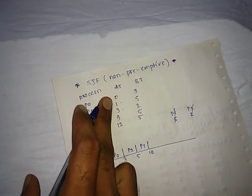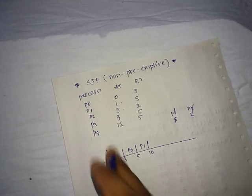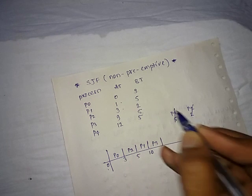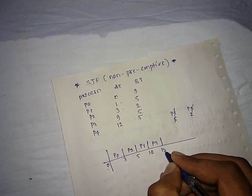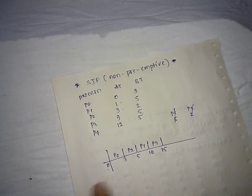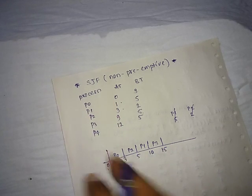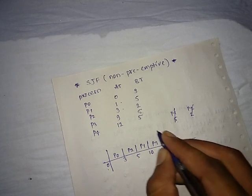Up to this 10, we are having a process arriving at system at 9, so you can schedule this P3 process. The burst time was 5, so here 10 plus 5 becomes 15. Up to from 0 to 15, you are having a new process at 12, that is P4. Schedule P4, and this becomes 15 plus 5 equals 20. So this completes your Gantt chart.